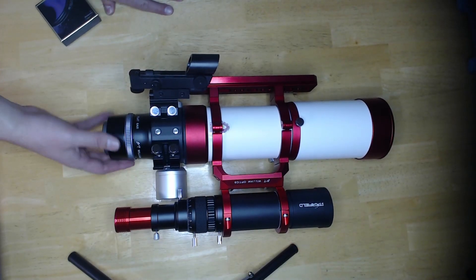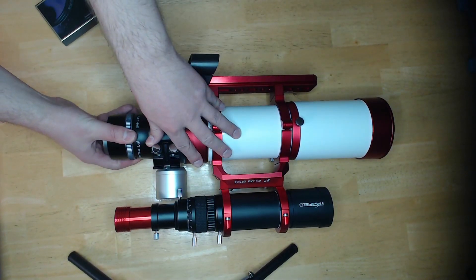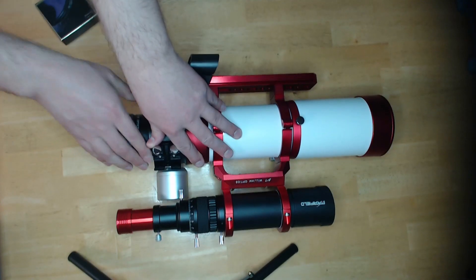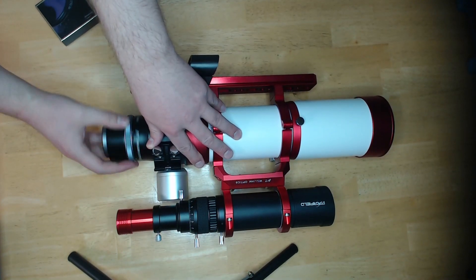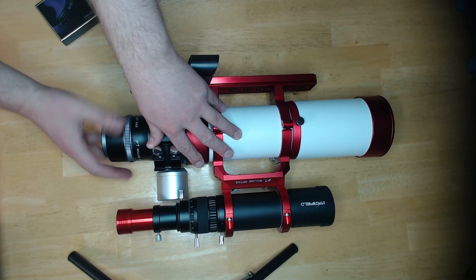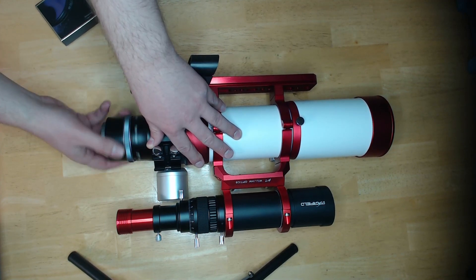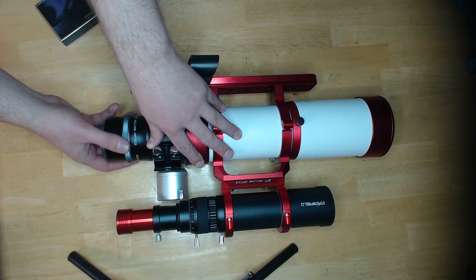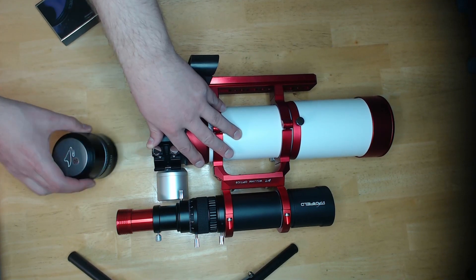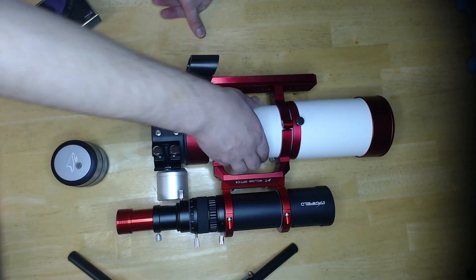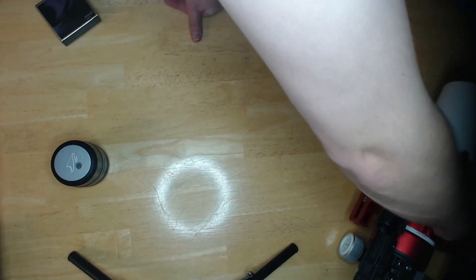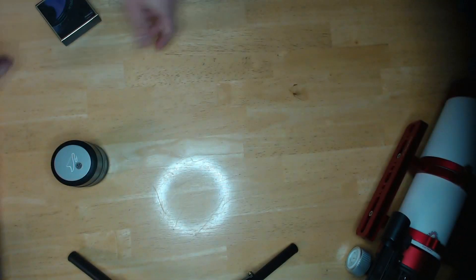To start, simply remove your focal reducer from the back of your telescope. You can now set your telescope aside. You won't need it again until the end of this process.